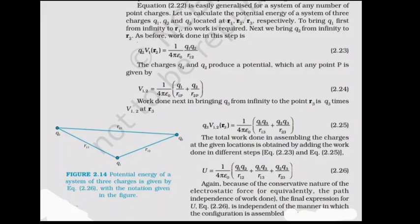Due to the conservative nature of the electrostatic force and path independence of work, this final expression for U is independent of the manner in which the configuration is assembled. The total potential energy of a system of three charges is U = U12 + U13 + U23, and this principle extends to any number of charges.